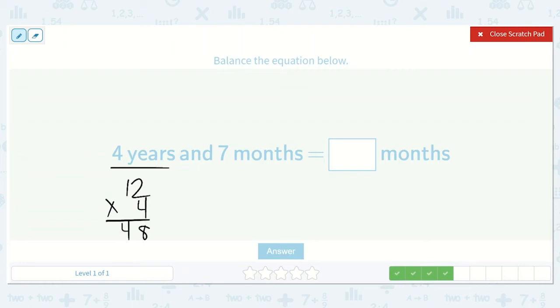So 48 months, but then plus these seven extra. So 48 plus seven is equal to 55. So that would be 55 months.